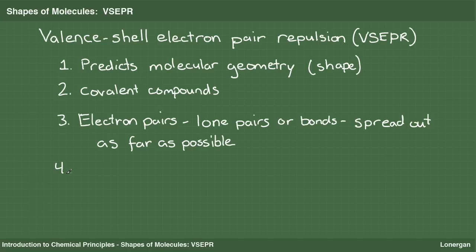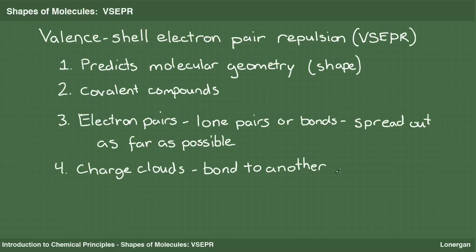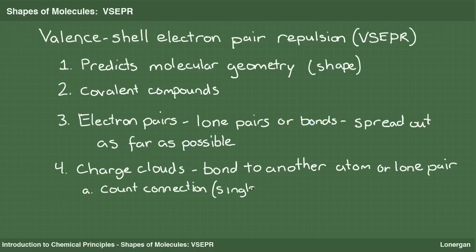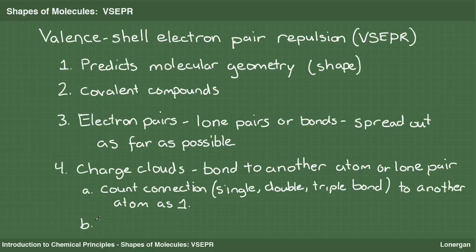The concept of charge clouds is central to VSEPR. A charge cloud is either a bond to another atom, or a lone pair. To determine the number of charge clouds around a central atom, first count each connection to another atom as one. It does not matter if the connection is a single, double, or triple bond — each connection counts only once. Next, count each lone pair once. The total of lone pairs and connections to other atoms is the number of charge clouds.